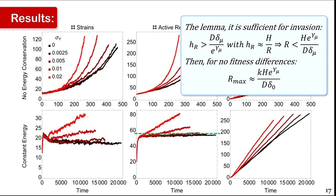I don't like this way of limiting energy by renormalizing inflow rates — it's unnatural, as if I'm the lab observer artificially changing everything when a mutant appears. A better way to include energy conservation is through cross-feeding: energy appears in one set of resources, and metabolizing those resources produces new resources.